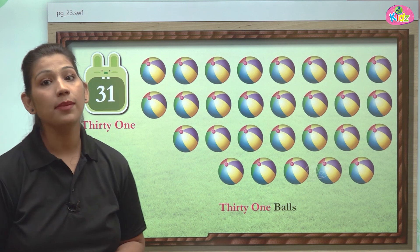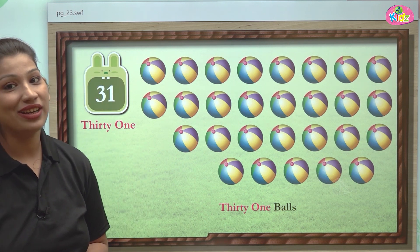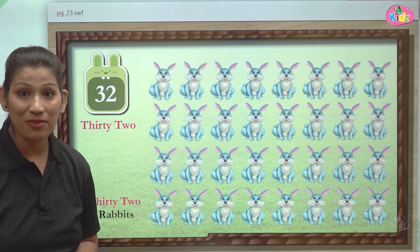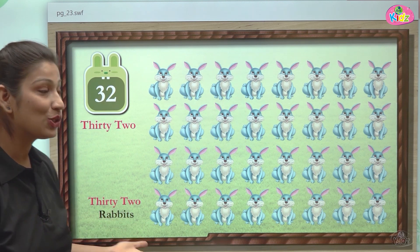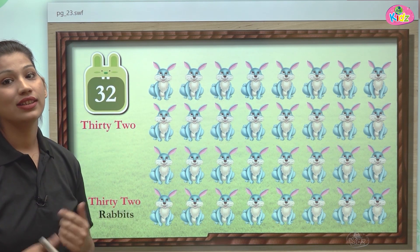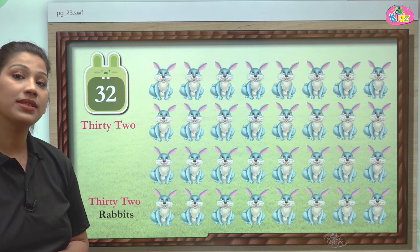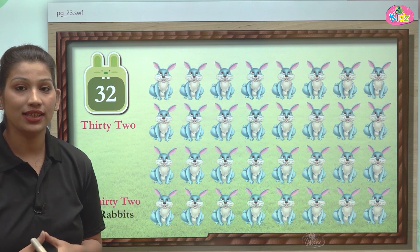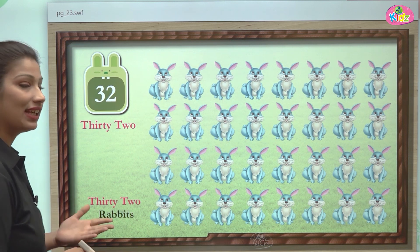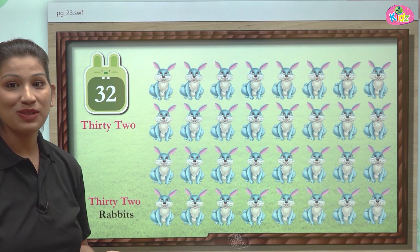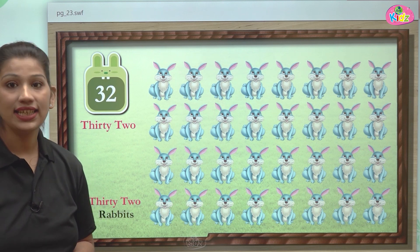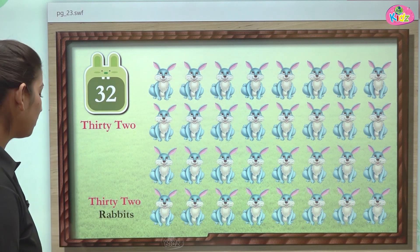After 31, there comes number 32. Here you can see rabbits. These rabbits are 32 in number. 32 is a two-digit number which comes after 31. 32 is also very easy to write. First you write 30, then you write two. T-H-I-R-T-Y is 30, T-W-O is two — together they make 32.